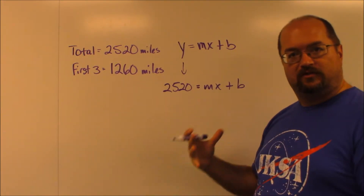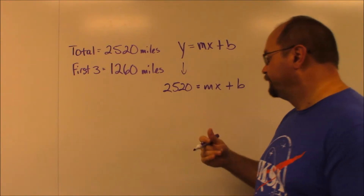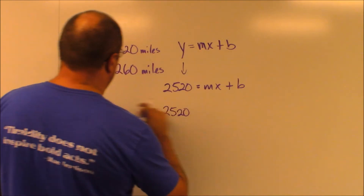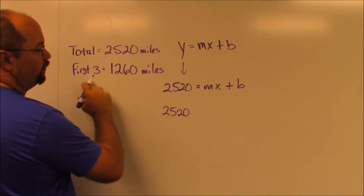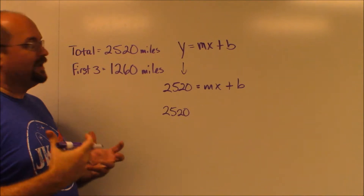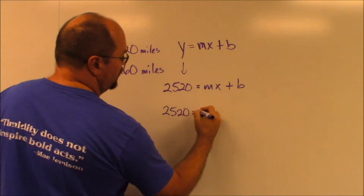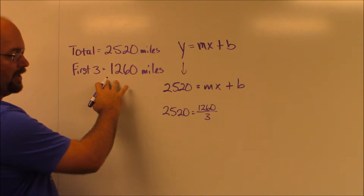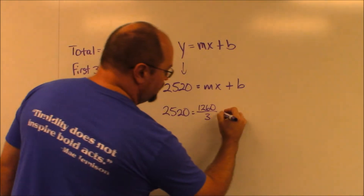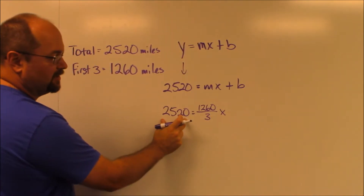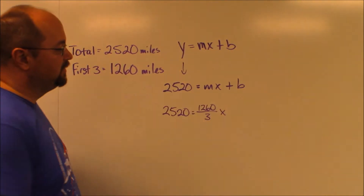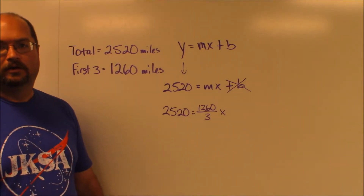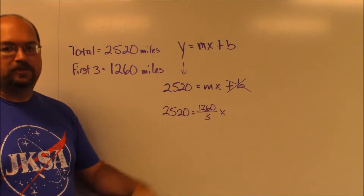So m, which is our rate of change and our slope value in this formula, is going to be this rate. The question is posed as: if they stay at this rate — 1,260 miles in three days — if they stay at that rate, how many days until they get there? Our b in this scenario we will not be using. So this ends up being our solution.